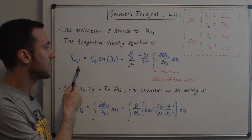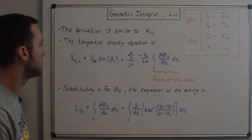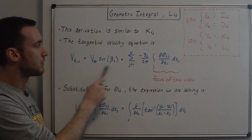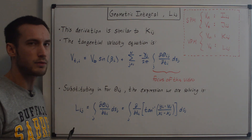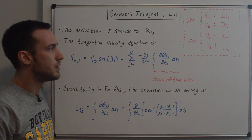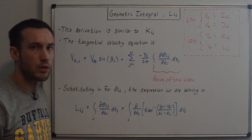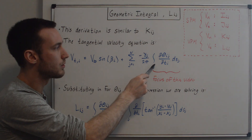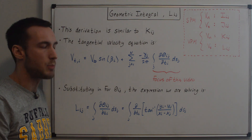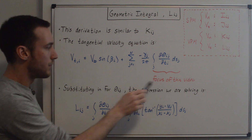Here you can see the tangential velocity equation. We've already taken the partial derivative of the velocity potential with respect to the tangential direction, and we get the tangential velocity V_T on the i-th panel equal to the free stream term — already simplified in my flow around an airfoil video — plus a term from all of the vortex panels, where gamma_J, the vortex strength per unit distance, is outside the integral because we assume vortex strengths are constant on each panel but can vary from panel to panel. That integral term is the focus of this video.